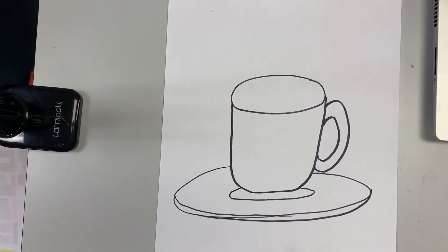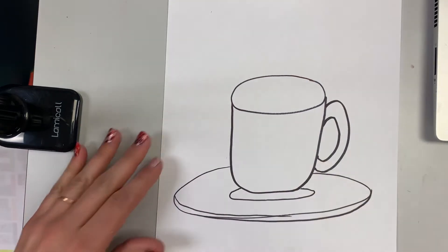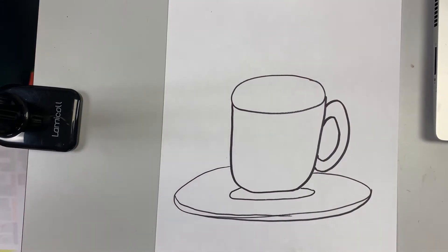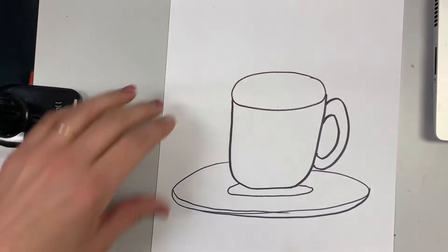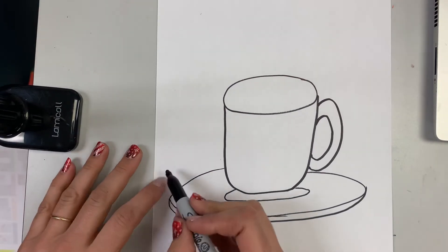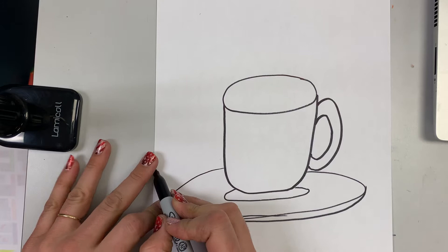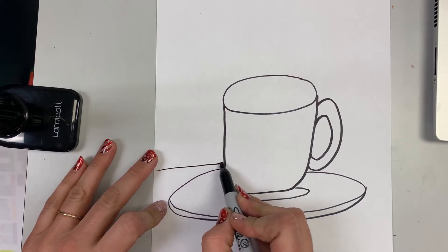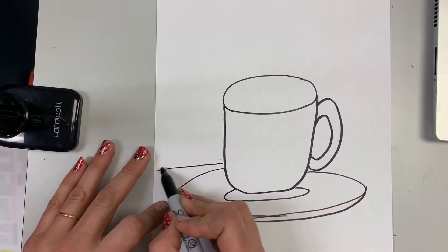All right, and last but not least before we get started on our patterns, I'm going to create the horizon line. And since this is inside, it is a still life drawing. I am not going to have a horizon line where the sky meets the earth. No, this is going to be the edge of my table. So I want to make sure my edge of my table is up here.